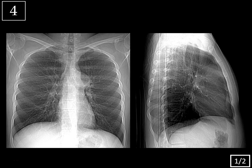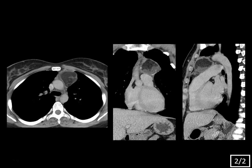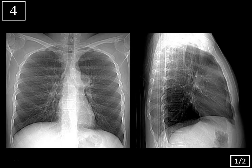Case four, slide one of two. On frontal and lateral views of the chest, there's a mass in the left suprahilar region on the frontal view, which is in the anterior superior mediastinum on the lateral view. When you have an anterior superior mediastinal mass, you can think of the five T's for your differential diagnosis: could this originate from the thymus — like a thymic cyst, thymoma, thymic carcinoma, or thymolipoma?